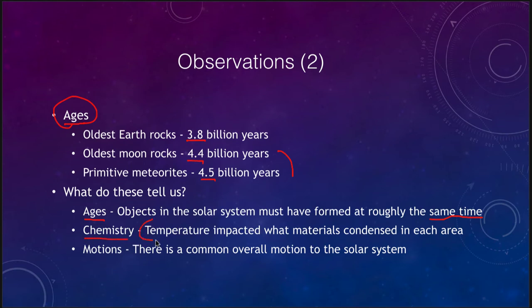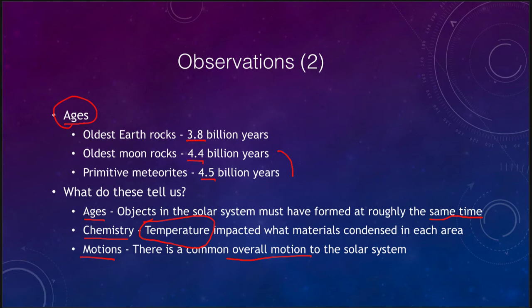In terms of chemistry, we find that temperature impacted what materials condensed in each area. The hotter it was, closer to the Sun, the more materials could condense that don't vaporize as easily — things like metals and rocks could condense close to the Sun. When you got further away, you could actually form ices and allow those to build planets as well. The motions tell us there is a common overall motion to the solar system — not random, but a clear overall pattern.